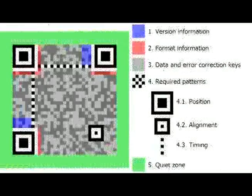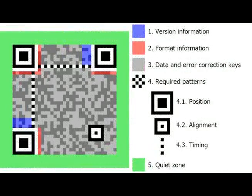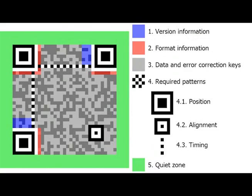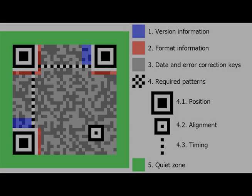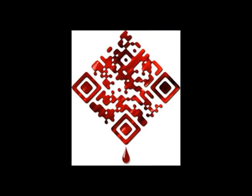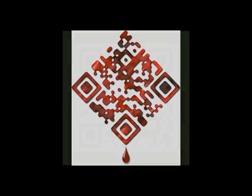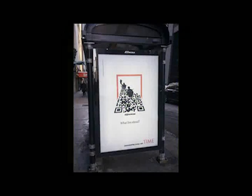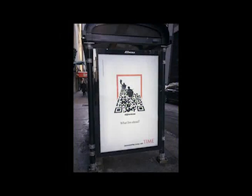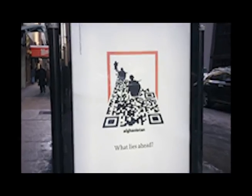The code consists of black modules arranged in a square pattern on a white background and can store up to 1,852 characters. Commonly used in advertising and can be read by smartphones, QR codes with artistic embellishments are now common.